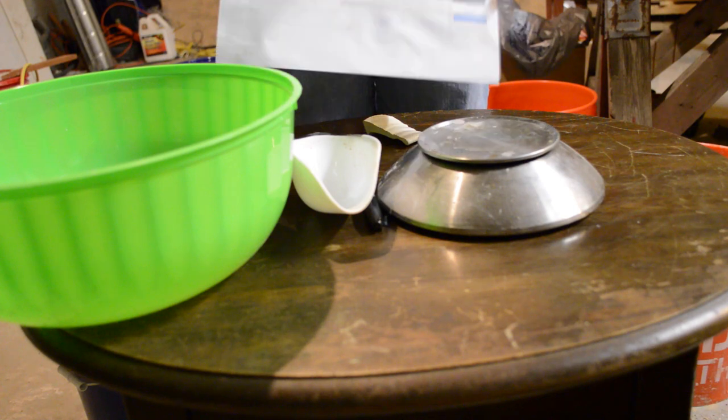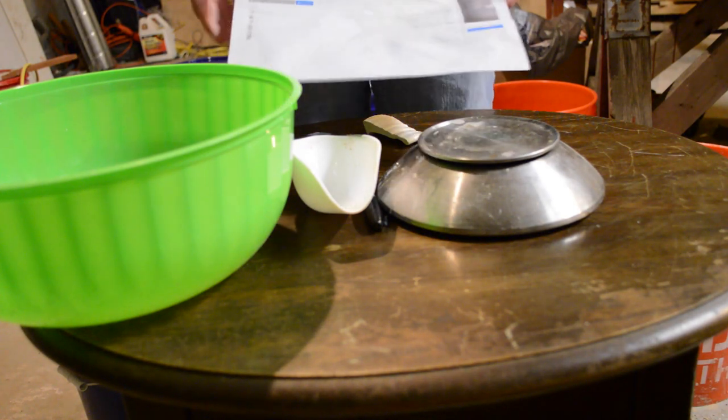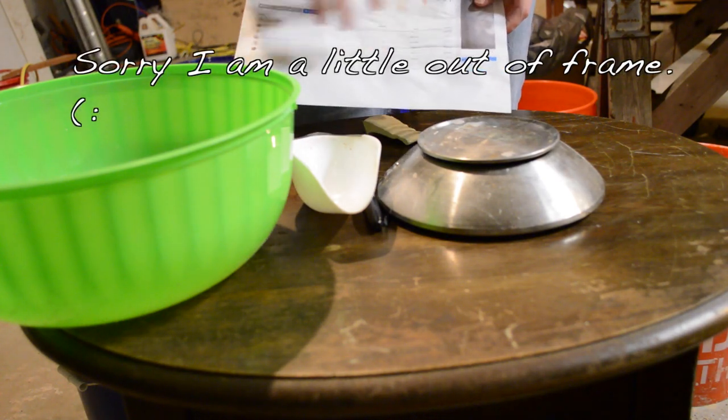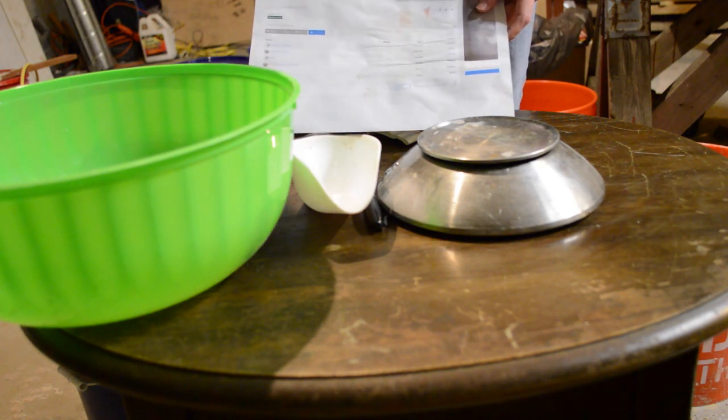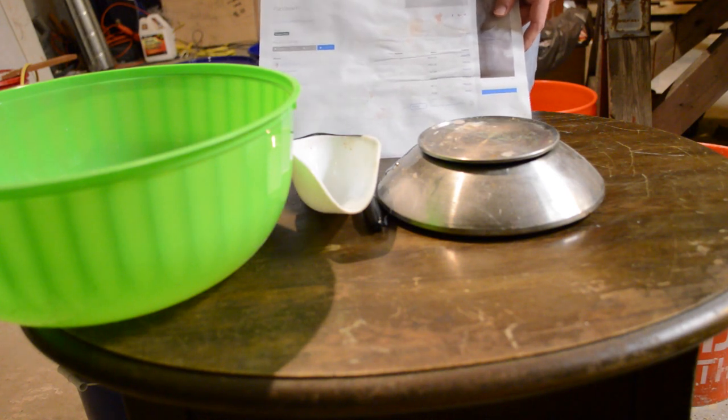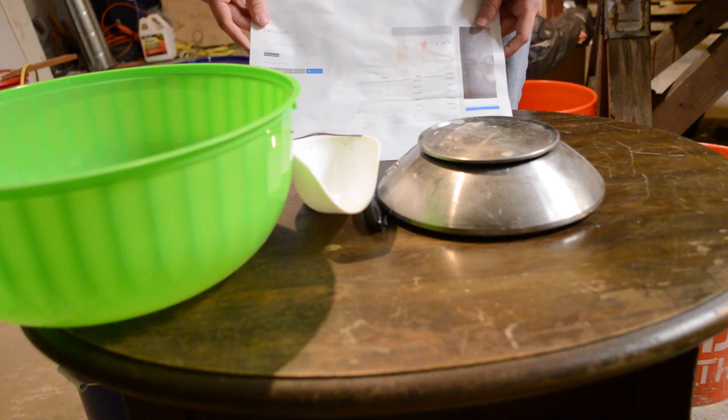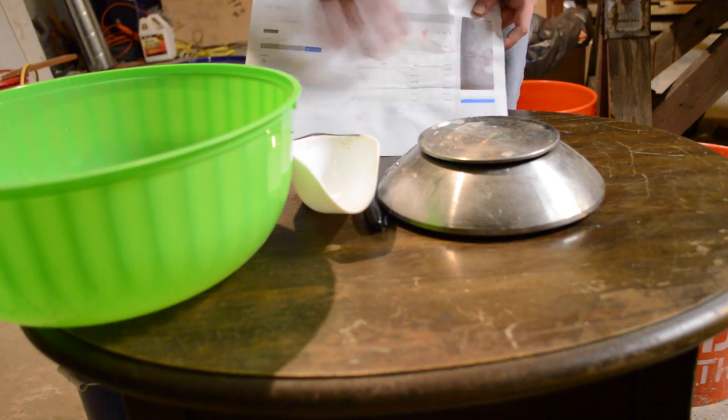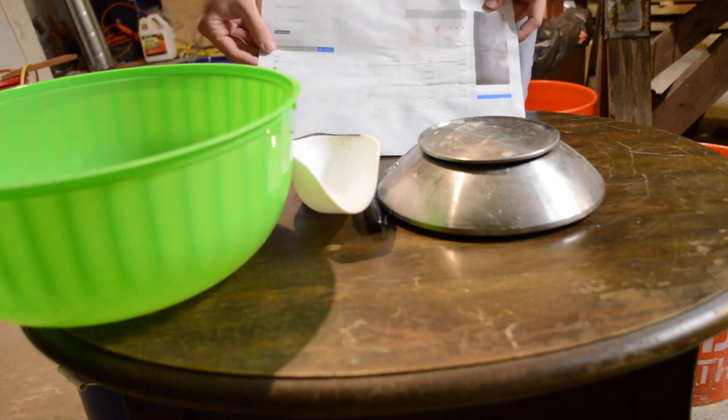My favorite source for these is glazy.org, but there's also a ton of other websites that you can get these dry glaze recipes from. Pinterest is a good one, John Britt's Guide to Mid-Range Glazes is a really good one. Or you might go to school somewhere that mixes their own glazes and you can see the recipes and recreate one of those at home.